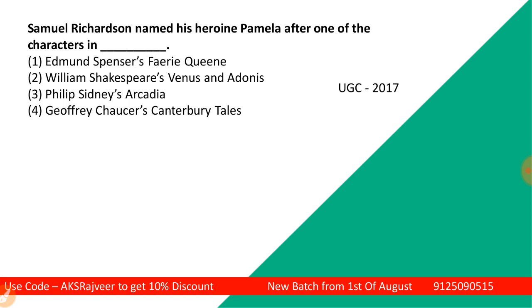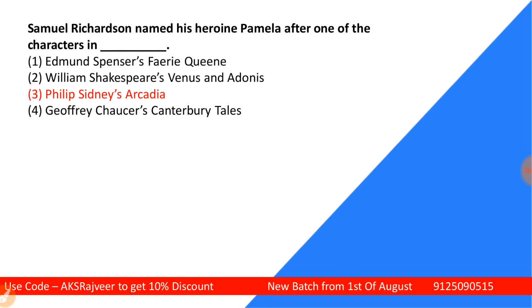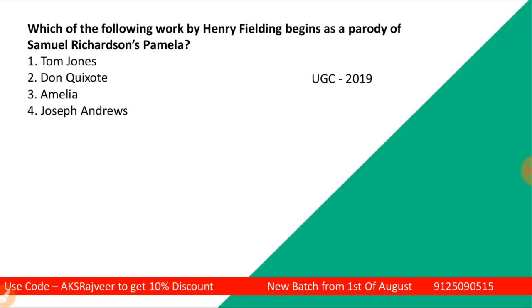Samuel Richardson named his heroine Pamela after one of the characters in: Edmund Spenser's Fairy Queen, William Shakespeare's Venus and Adonis, Philip Sidney's Arcadia, or Geoffrey Chaucer's Canterbury Tales. This question was part of your UGCnet exam in the year 2017. The correct answer is Philip Sidney's Arcadia — the name of the character Pamela was derived by Samuel Richardson from Philip Sidney's Arcadia.